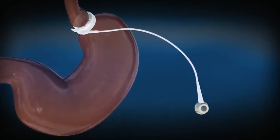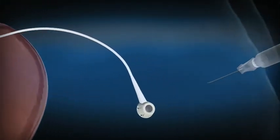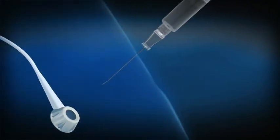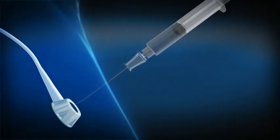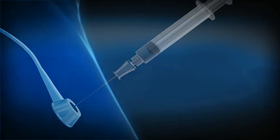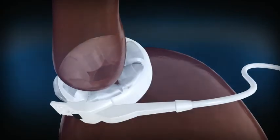Using a fine needle, saline solution can be added or removed from the band to find the right level of restriction. As saline inflates the inner surface of the LapBand system, the stomach outlet becomes smaller.